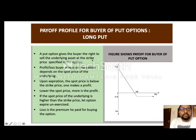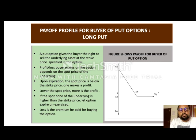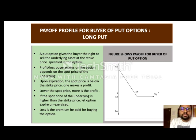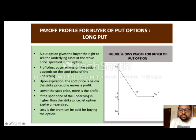The buyer of a put option: a put option gives the buyer the right to sell the underlying asset at the strike price. Profit or loss depends on the spot price. Upon expiration, if the spot price is below the strike price, one makes a profit — the lower the spot price, the more the profit. If the spot price is higher than the strike price, the option lapses and the loss is the premium paid. The put option buyer paid Rs. 61.70 as premium, with a strike price of 2250. If the share price decreases from 2250, he may get profit.